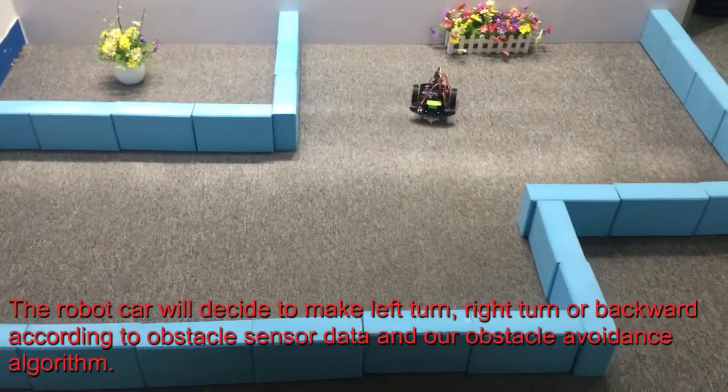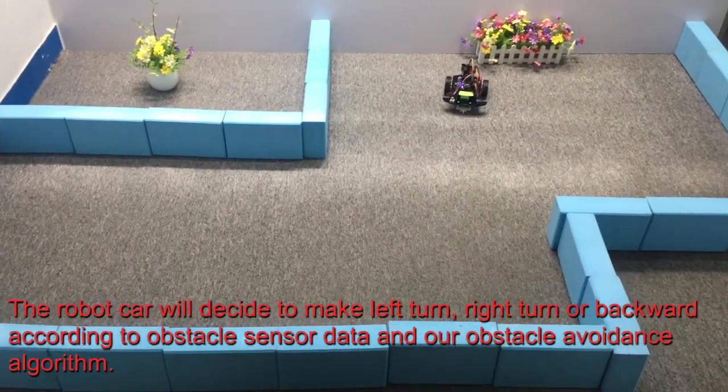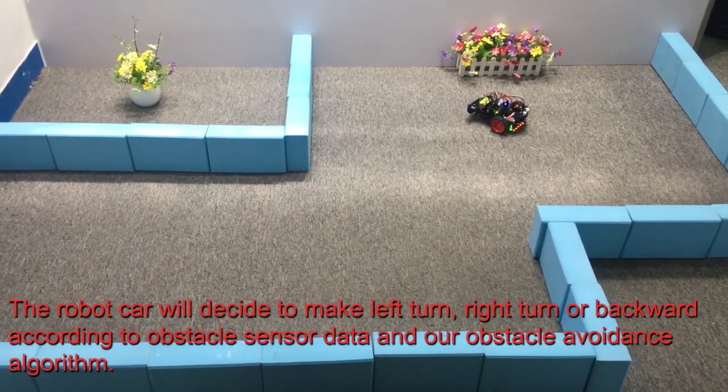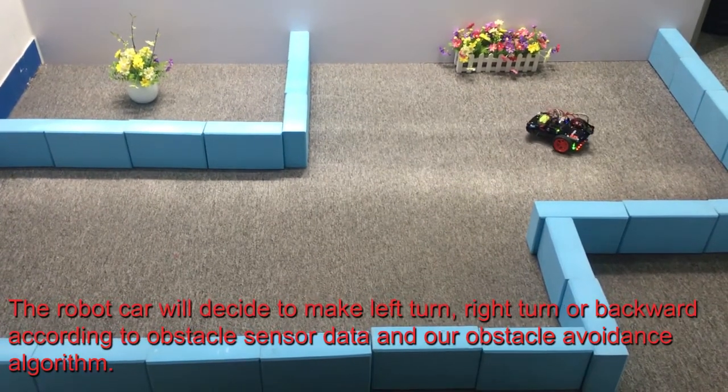The robot car will decide to make a left turn, right turn, or backward movement according to obstacle sensor data and our obstacle avoidance algorithm.